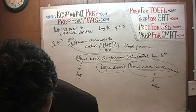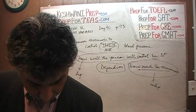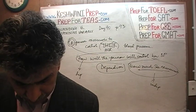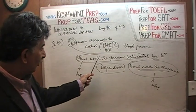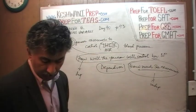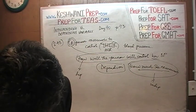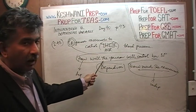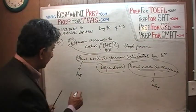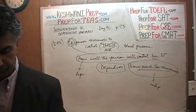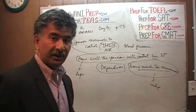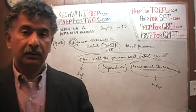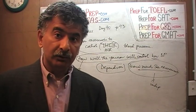Let's read it verbatim as it appears in the book: the blood pressure changes depend on the amount of exercise. The blood pressure is the dependent variable, and the amount of exercise is the independent variable. That's all there is. I was planning to do more problems, but I've been talking for a while and the video has gotten longer than anticipated. We'll end it here — see you tomorrow, bye now.